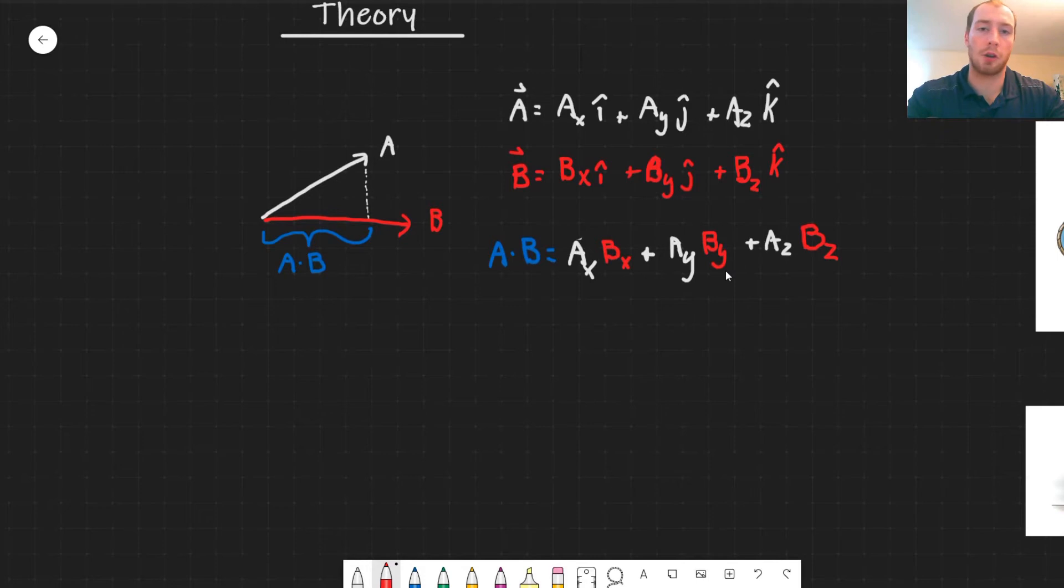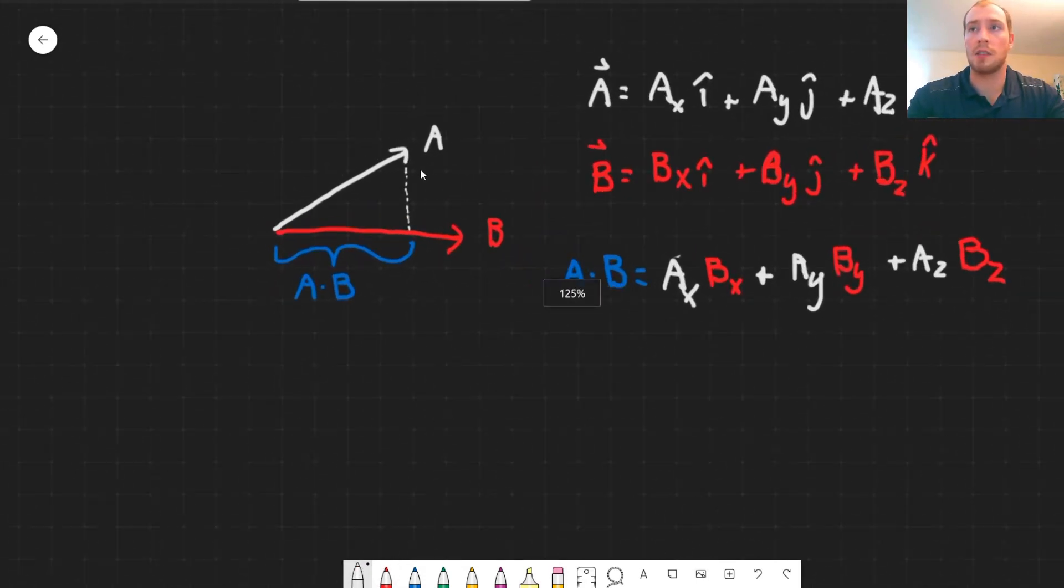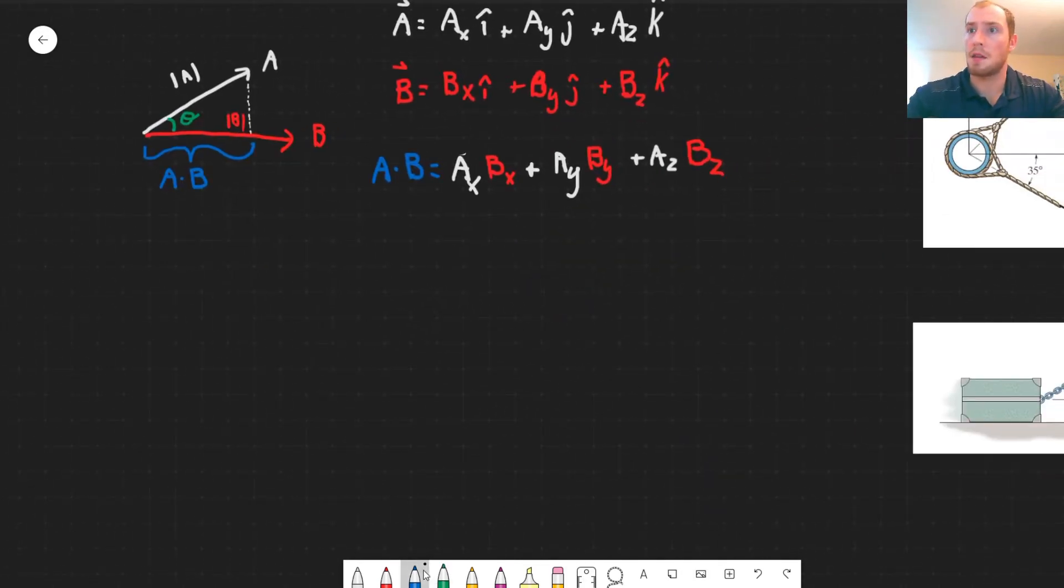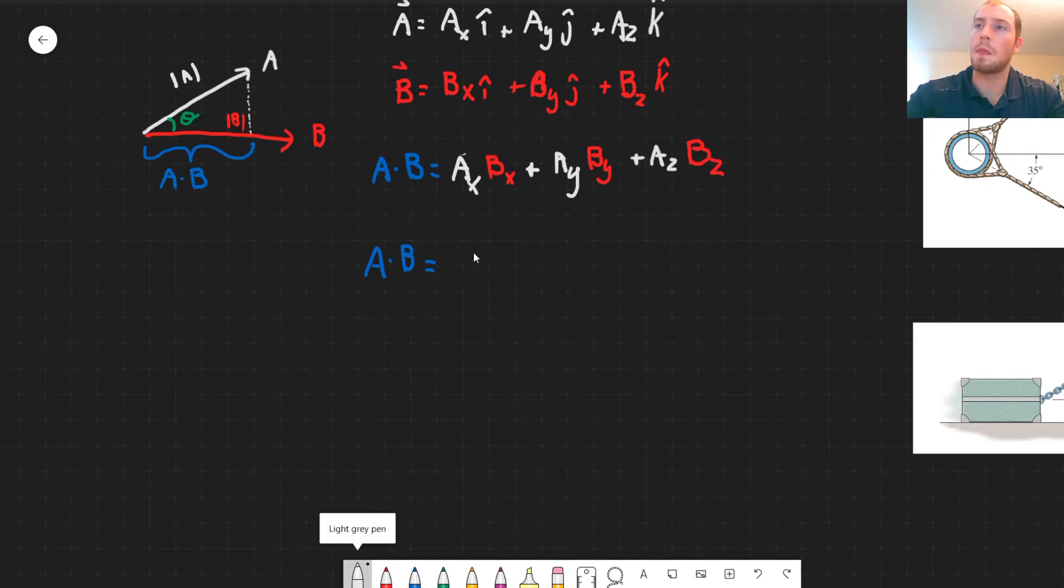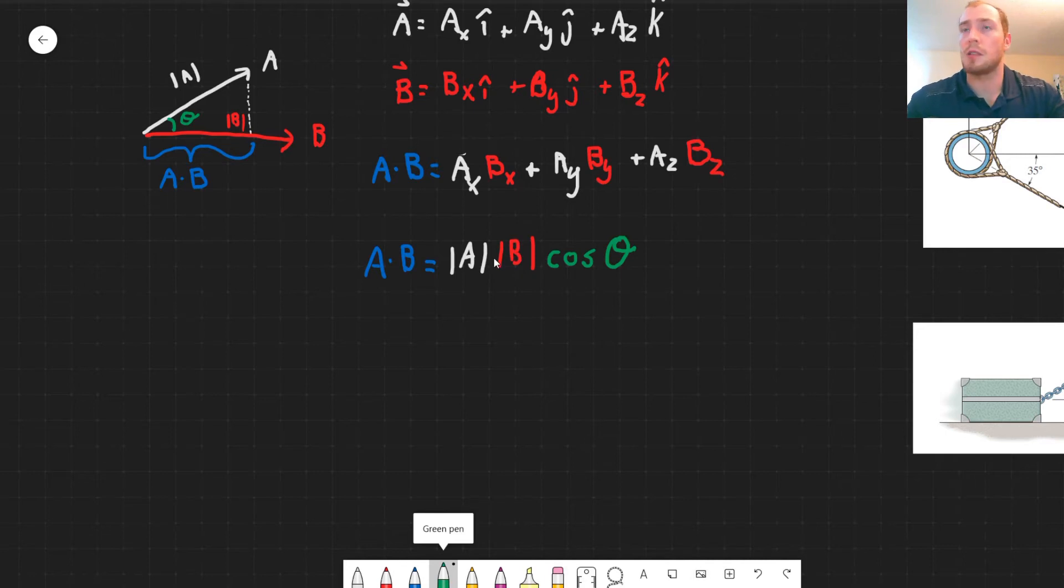So this is one way we can calculate the dot product. A second way would be using the magnitudes of these vectors. So if we take the magnitude of this vector A as the absolute value of A, and then we take the magnitude of your vector B as the absolute value of vector B, and then the angle between these two vectors, we name that as theta, we can now calculate what the dot product is using the magnitudes as well as the angle theta. So this can be described as A dot B is equal to the magnitude of your vector A multiplied by your magnitude of your vector B multiplied by cosine of your angle. And that's mostly all the theory that I have for you.